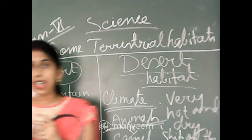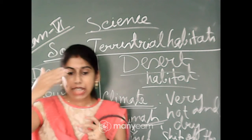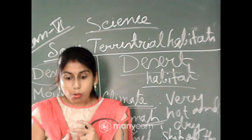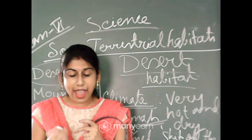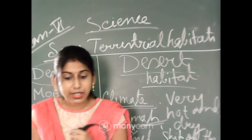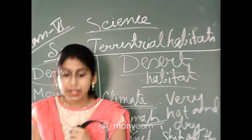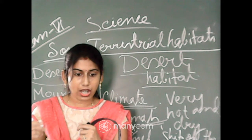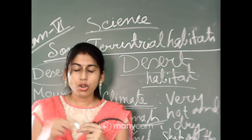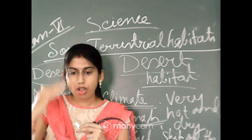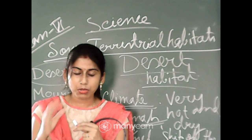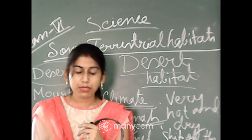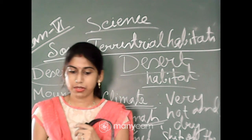Another feature is that camels have very long eyelashes. Because they live in the desert, sandstorms may occur, and these long eyelashes protect their eyes from the sand wind.